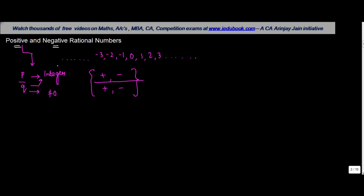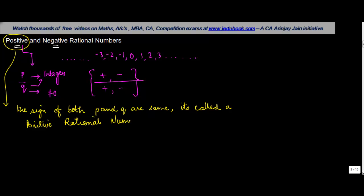Now, under this situation, the meaning of a positive rational number is that whenever the sign of both P and Q are same, it's called a positive rational number.